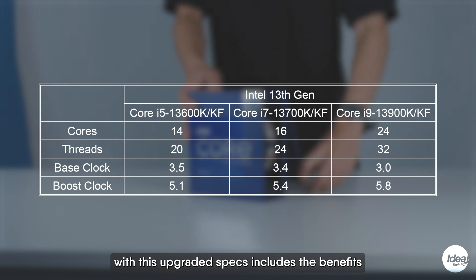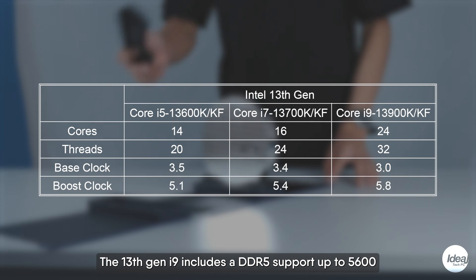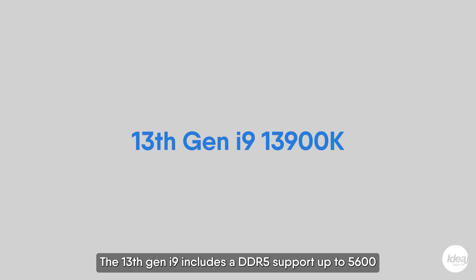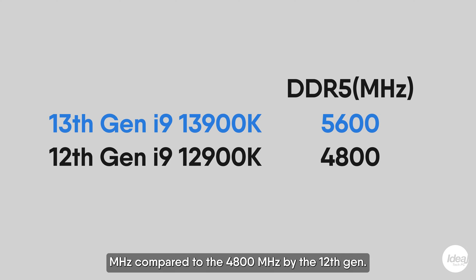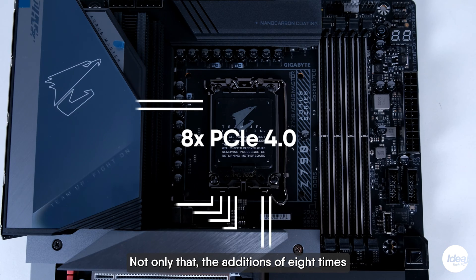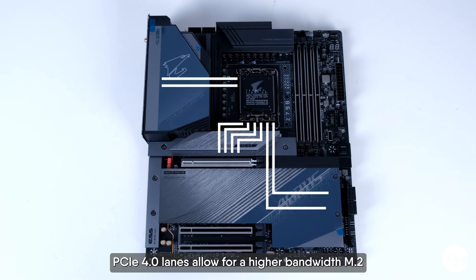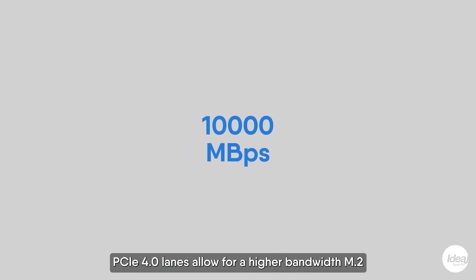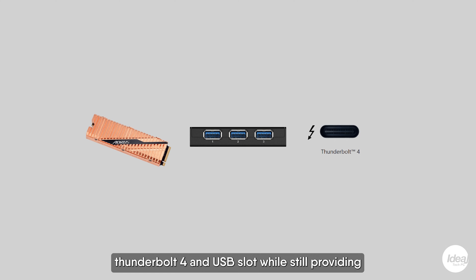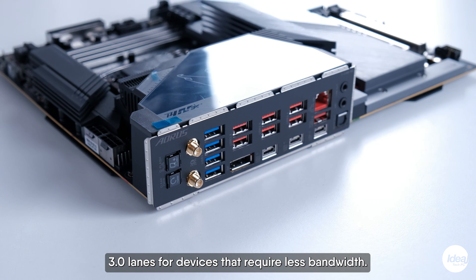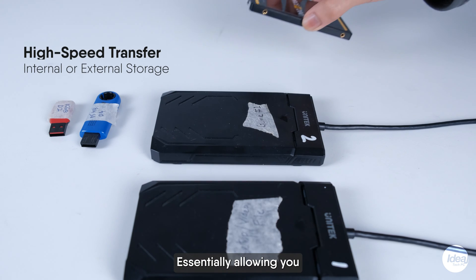In addition, with these upgraded specs comes the benefit it provides mainly around connectivity. The 13th Gen i9 includes DDR5 support up to 5600MHz compared to 4800MHz by the 12th Gen. Not only that, the addition of 8x PCIe 4.0 lanes allows for higher bandwidth M.2, Thunderbolt 4, and USB slots, while still providing several PCIe 3.0 lanes for devices that require less bandwidth.